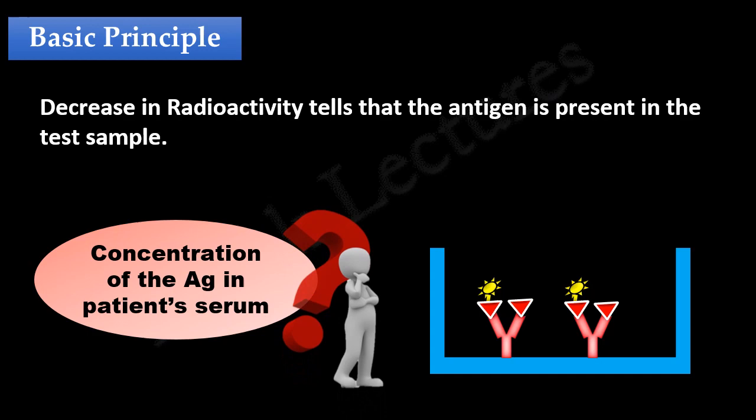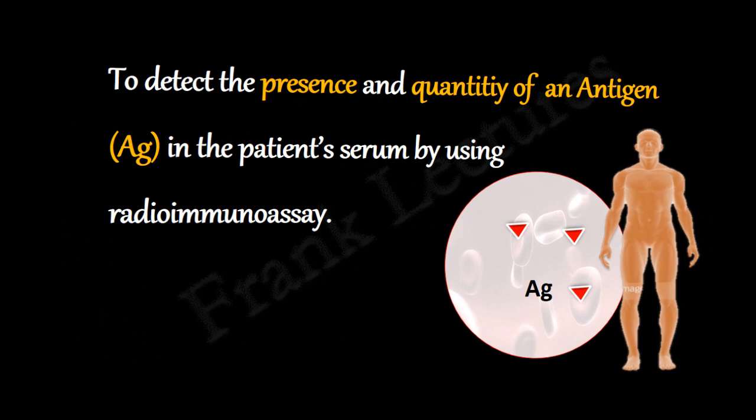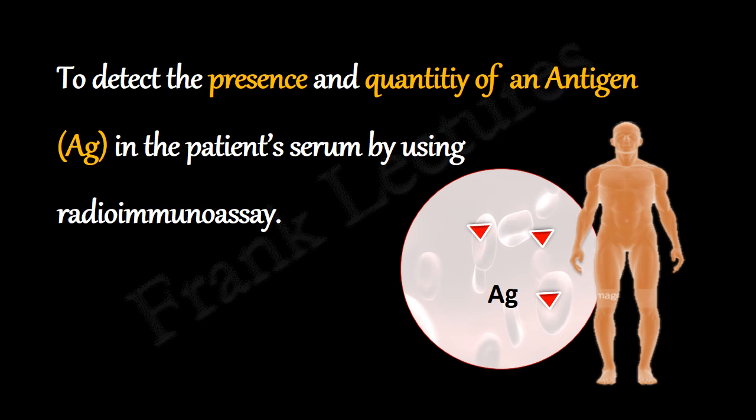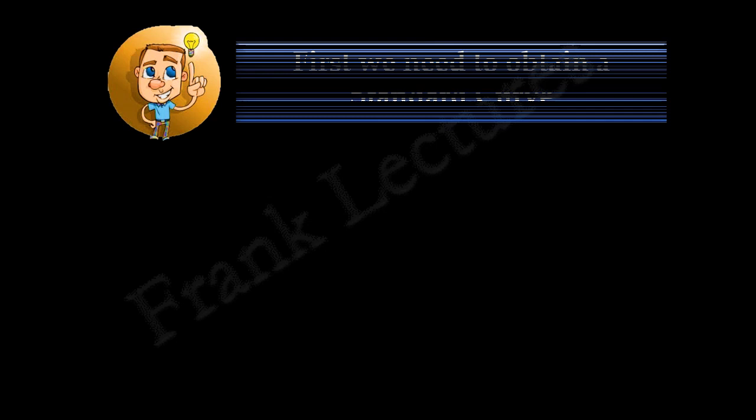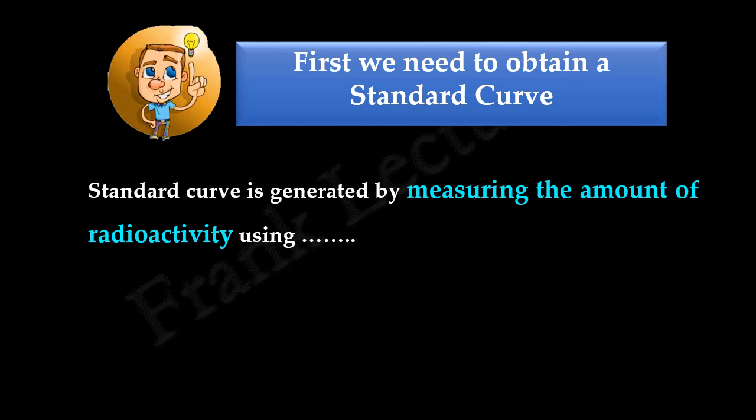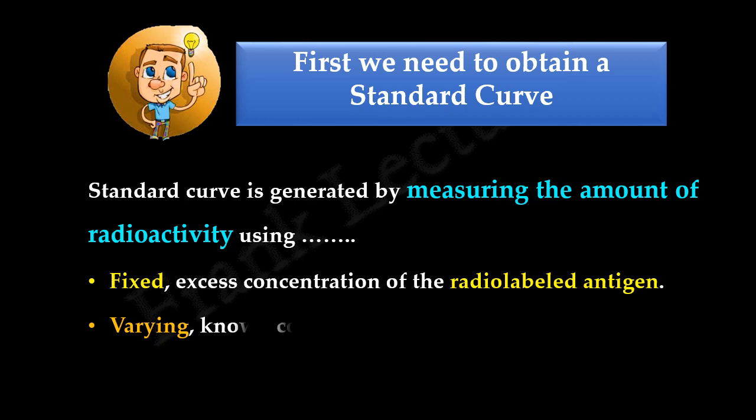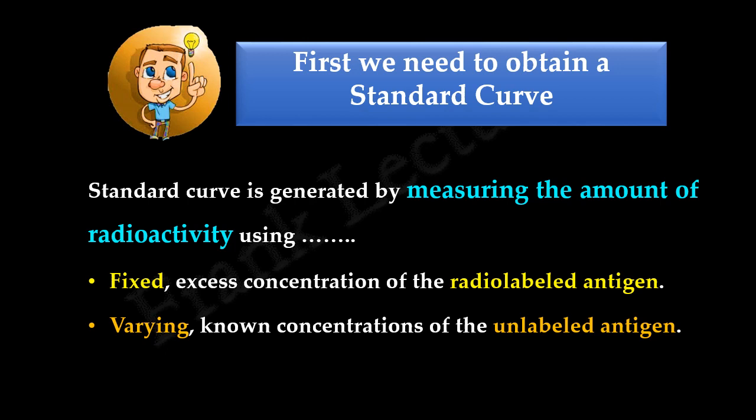But how to determine the concentration of this antigen? Suppose we want to detect the presence and quantity of an antigen in the patient's serum. To quantitate the antigen present in the patient's serum, first we need to obtain a standard curve. This standard curve is obtained by measuring the amount of radioactivity using a fixed and excess concentration of radiolabeled antigen, and varying known concentrations of the unlabeled antigen. Note that both these radiolabeled and unlabeled antigens are the same as the antigen we are going to detect and quantitate in the patient's serum.